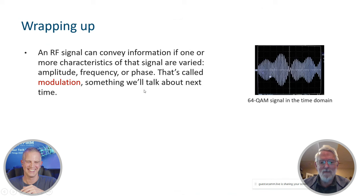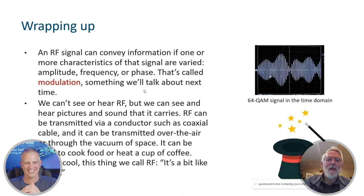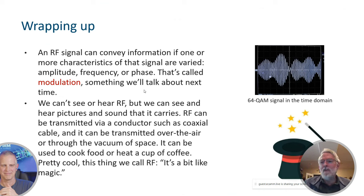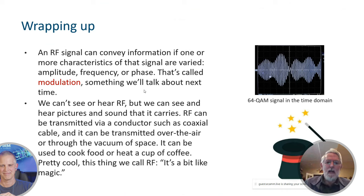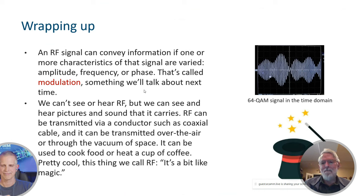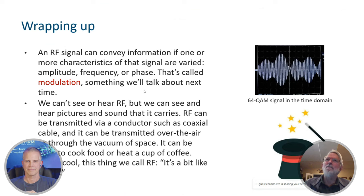We can't see RF, we can't hear it, but we can see and hear the pictures and sound that it carries — it's like magic. RF can be transmitted by a conductor such as coax, transmitted over the air from a radio station's antenna to your car radio, transmitted through the vacuum of space to distant spacecraft probes orbiting Jupiter, or used to cook food or heat a cup of coffee. That makes this thing we call RF pretty cool.